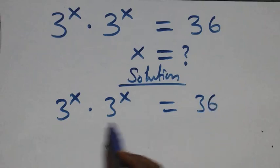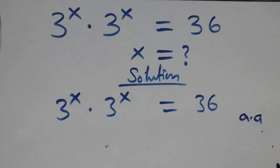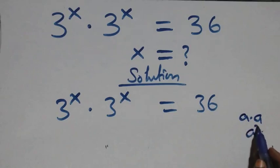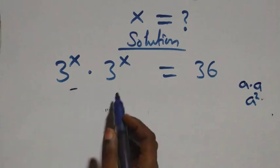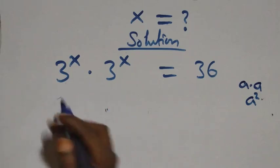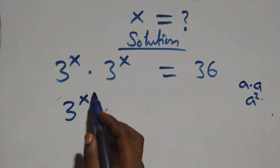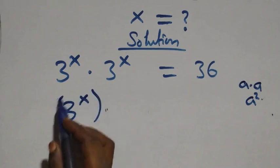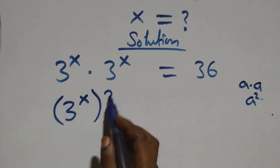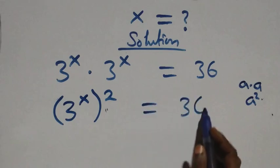This follows when we have a times a, which is the same thing as a squared. That is, multiplying each other, and we can write it as a raised to power x, squared, which then equals to 36.